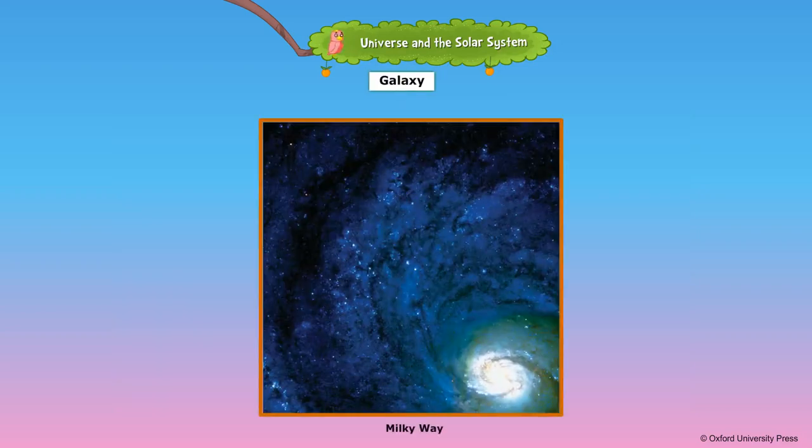Millions of stars, constellations and solar systems form a galaxy. Our Earth, sun and solar system are in a galaxy called the Milky Way. It is a spiral galaxy that looks like a catherine wheel or the ground chakra which is burnt in Diwali.